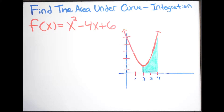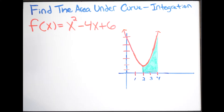In this example we're being asked to find the area under the curve and we have to use integration. You can see here that I'm given my function which is a quadratic in standard form. Before you try this video, make sure you watch my previous video where I showed you how to find the area under the curve dealing with the parent function of a quadratic, which is x squared — that one is a little bit simpler. Assuming you watched that, let's get right into it.